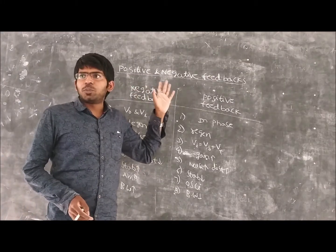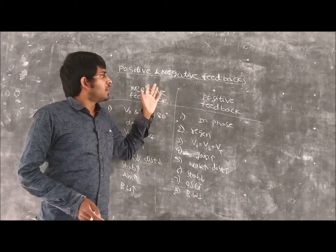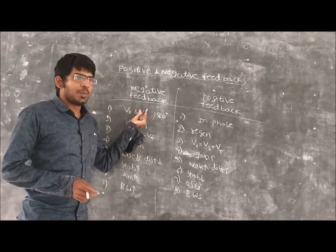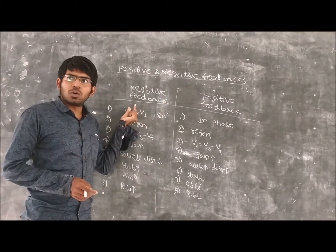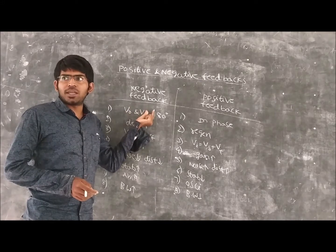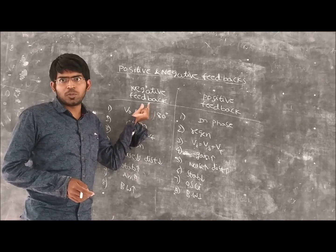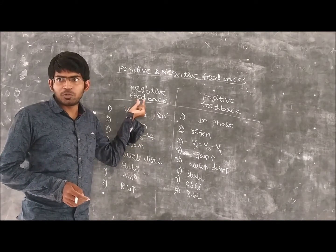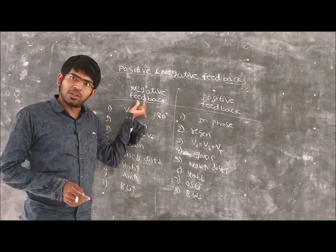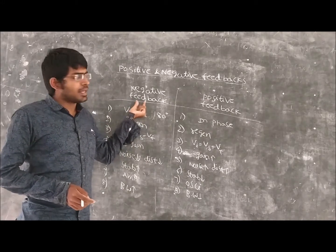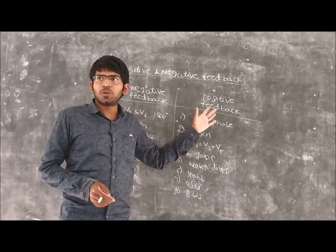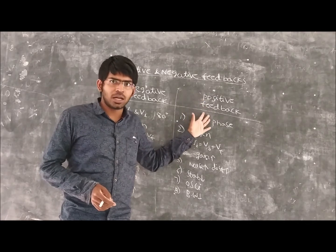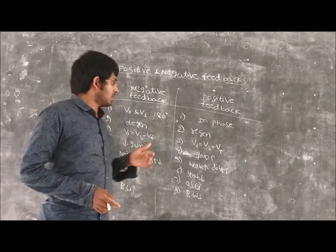Now we are seeing the difference between negative and positive feedbacks. If the input and output are out of phase by 180 degrees, that type of feedback is called negative feedback. If there is no phase difference between the input and output, then that type of feedback is called positive feedback.